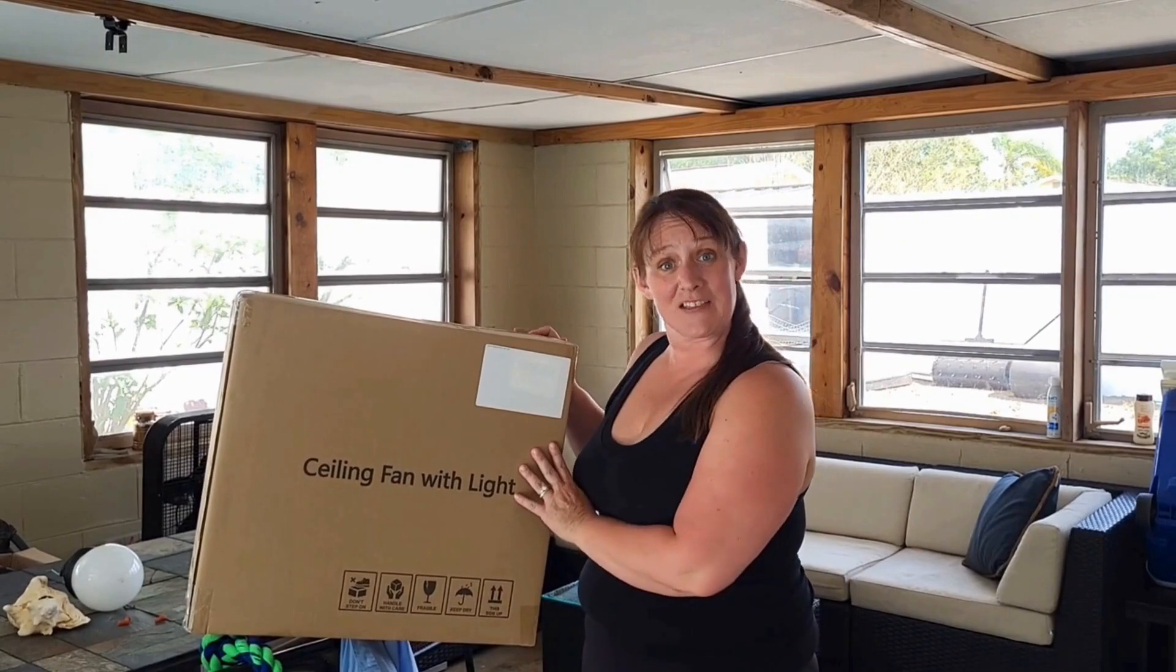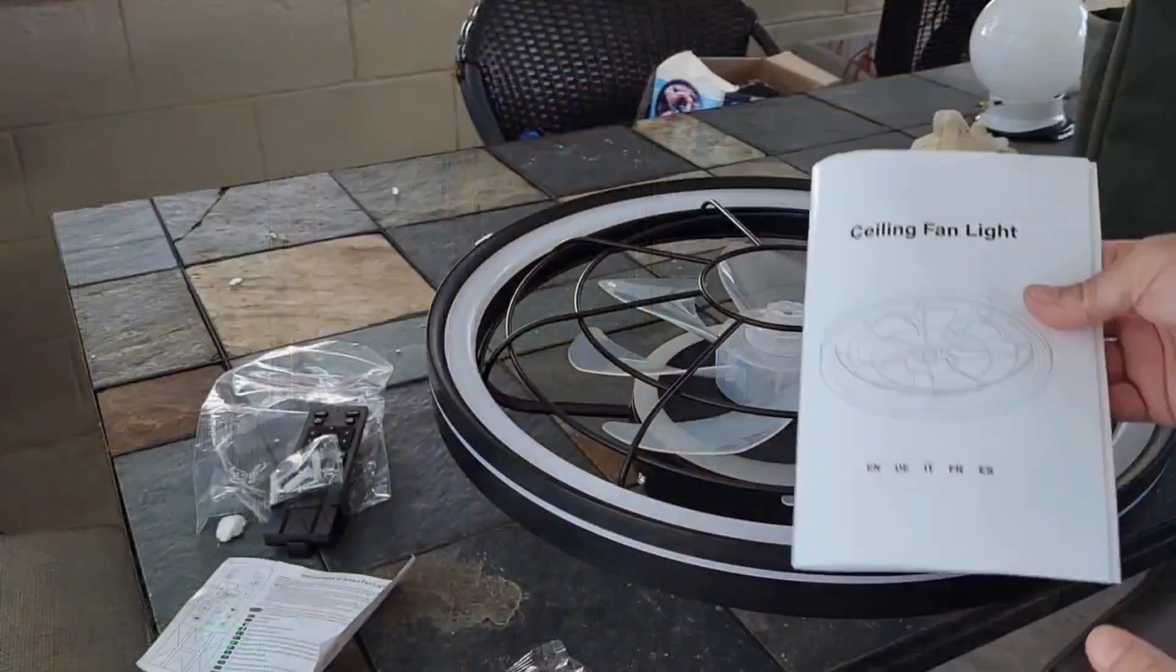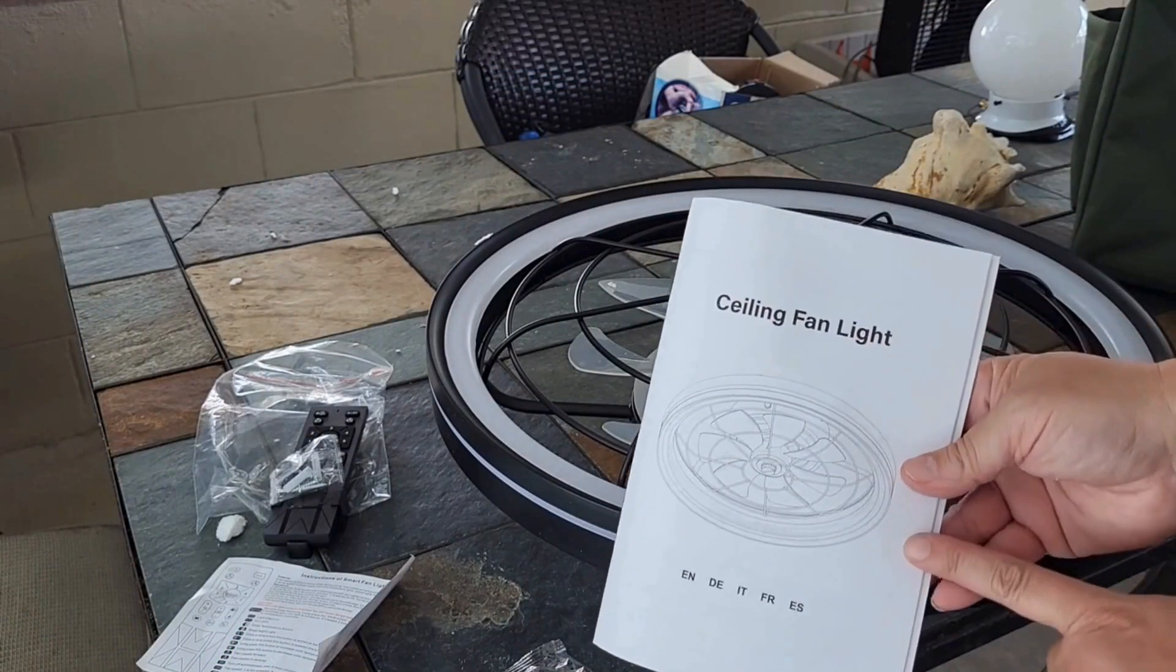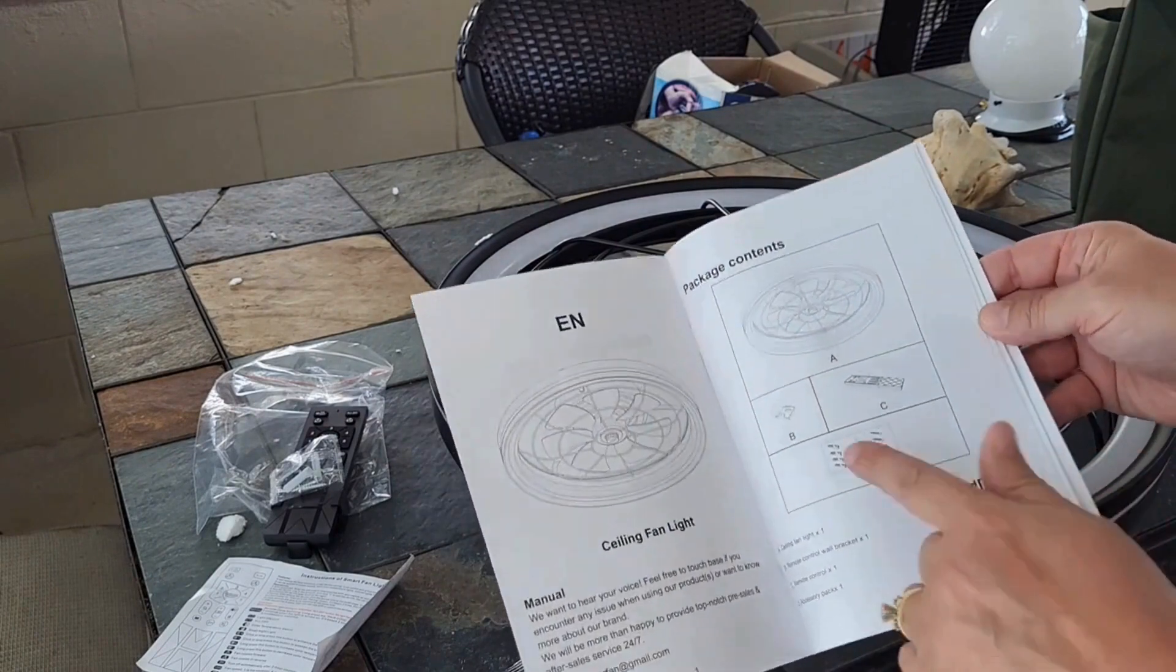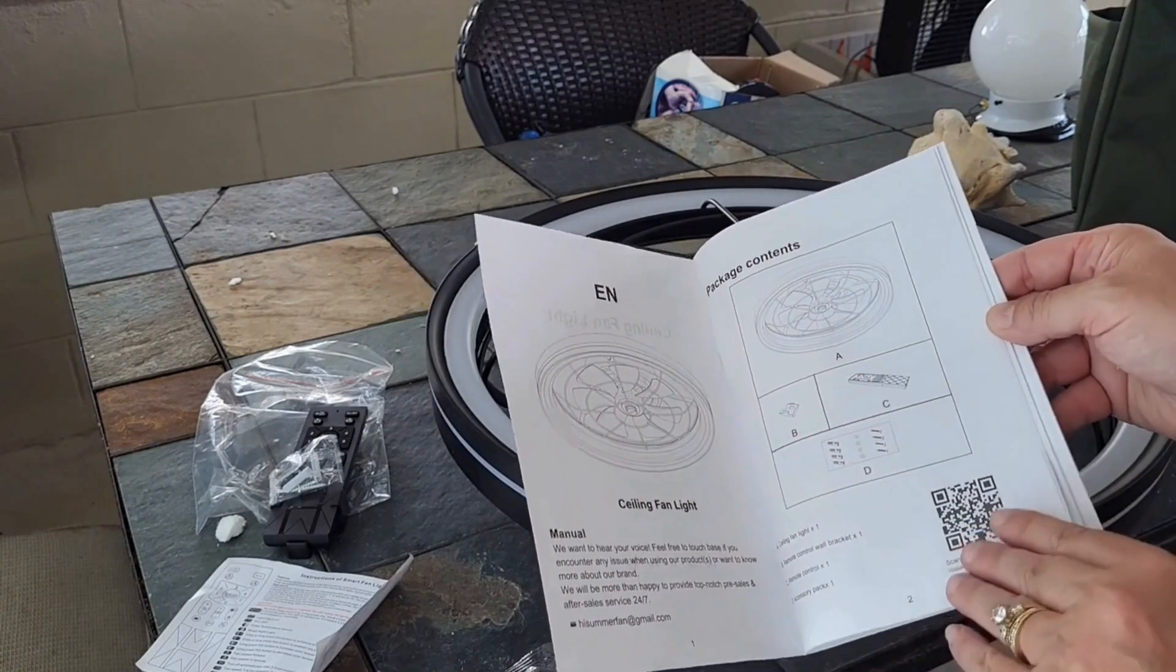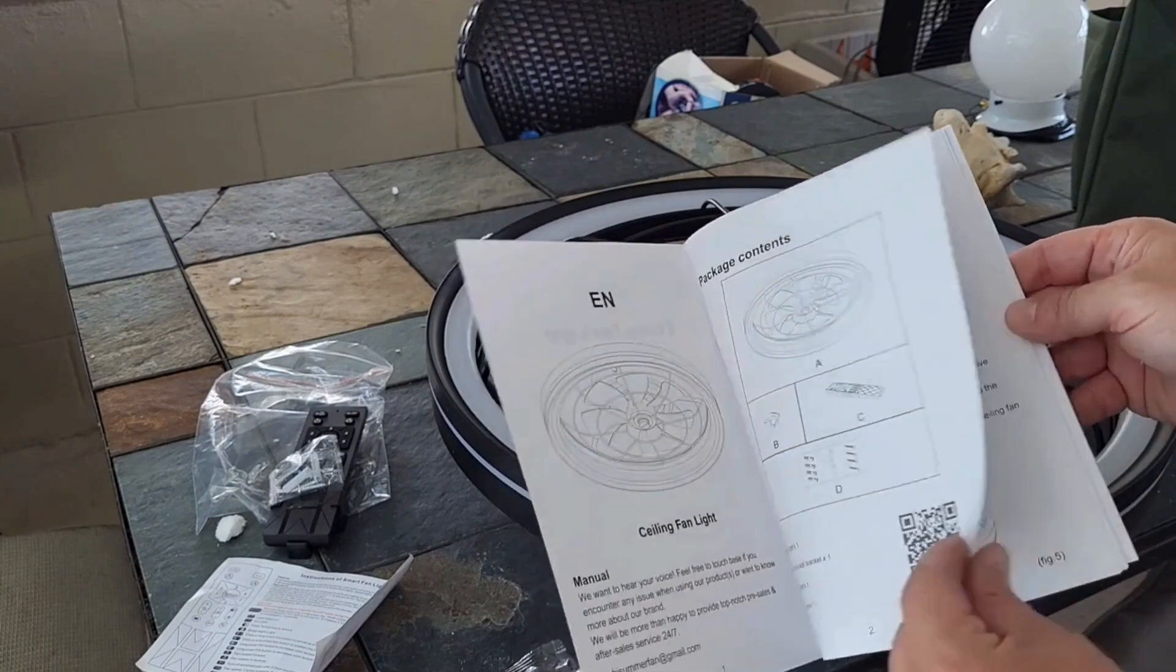Let's get this box open and see what we have. Now this is what came in the kit. You have a ceiling fan instruction book. It also tells you what's in the package itself, so you can double check to make sure you have everything.